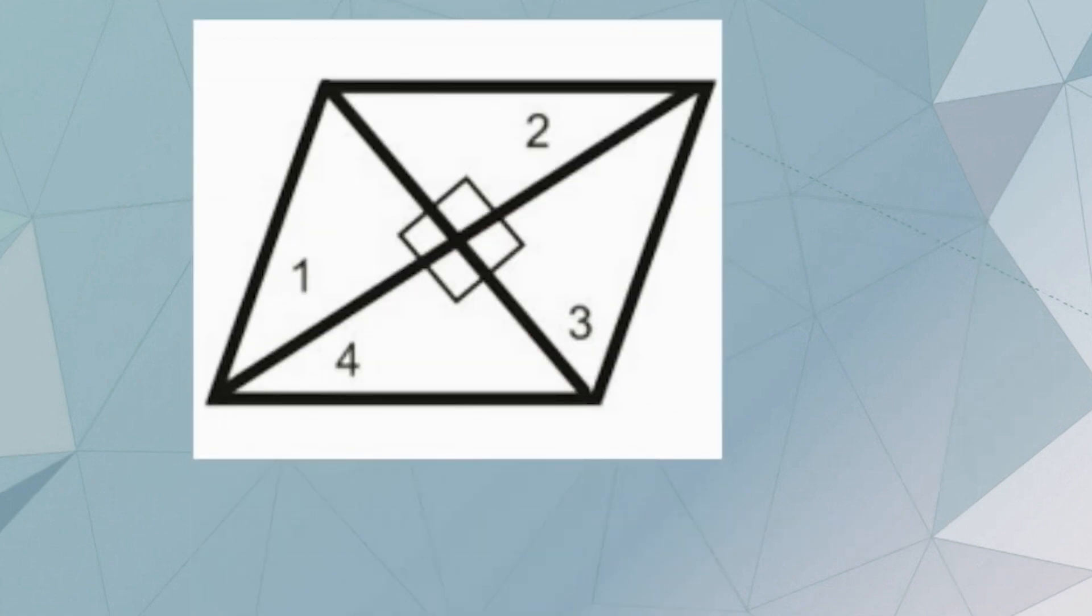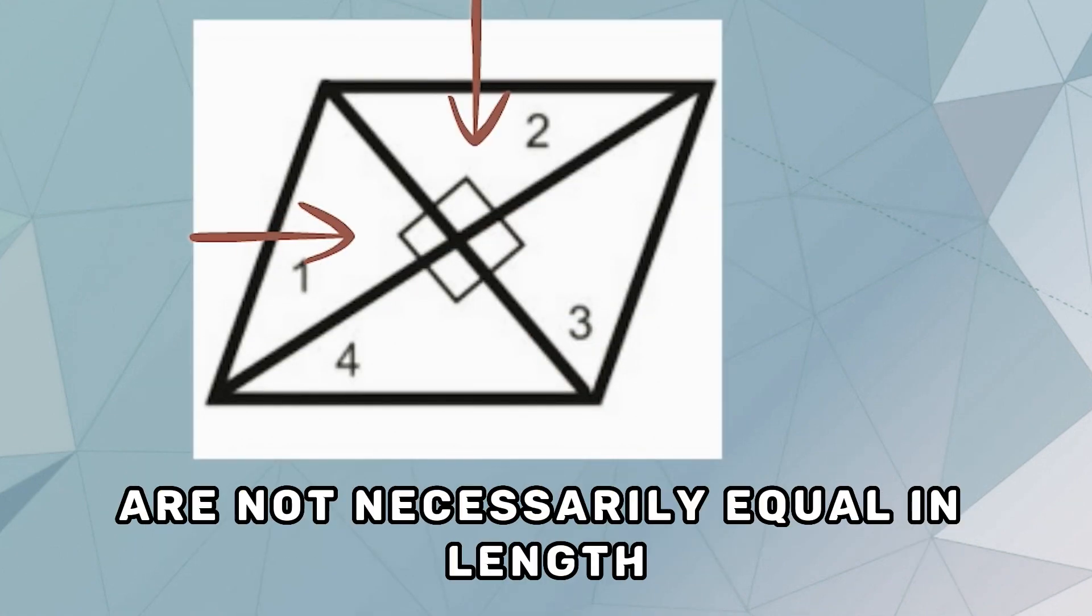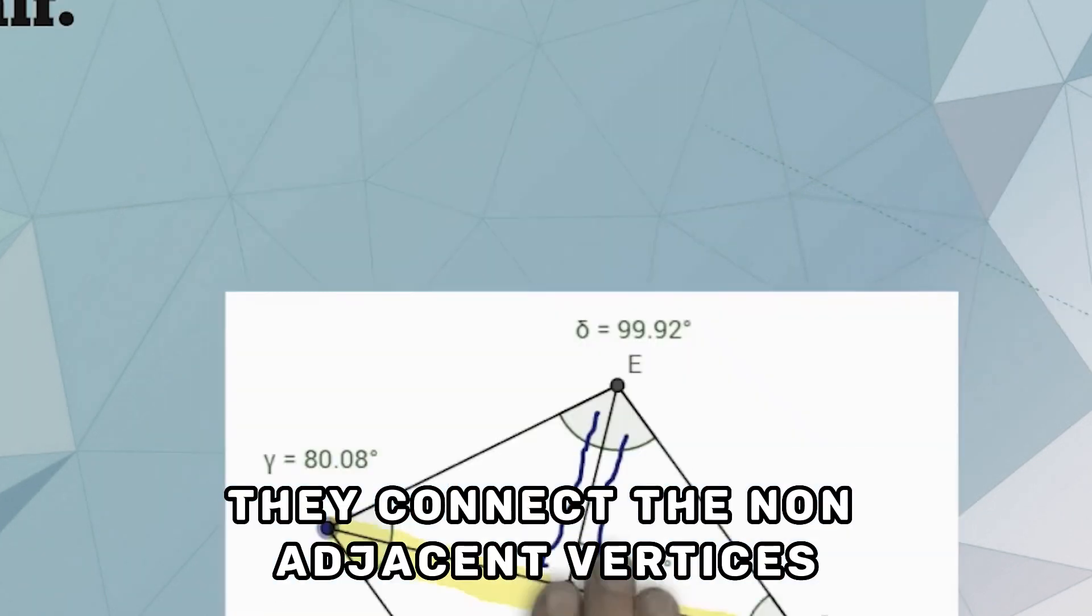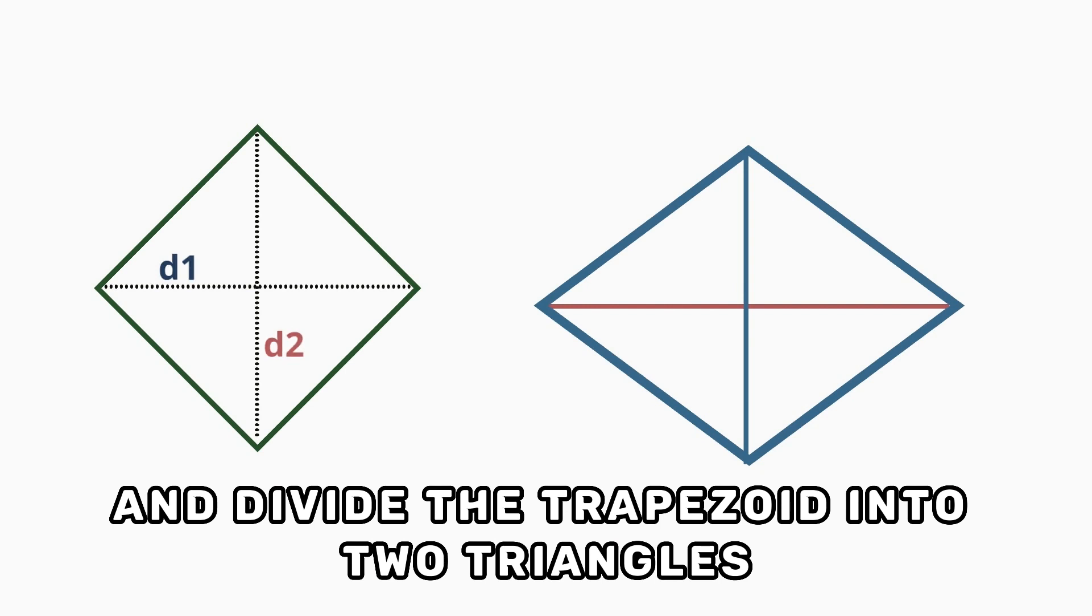Diagonals of trapezoid: The diagonals of a trapezoid are not necessarily equal in length. They connect the non-adjacent vertices and divide the trapezoid into two triangles.